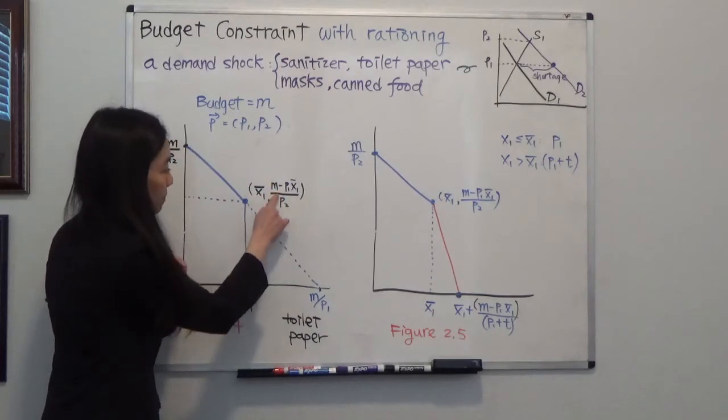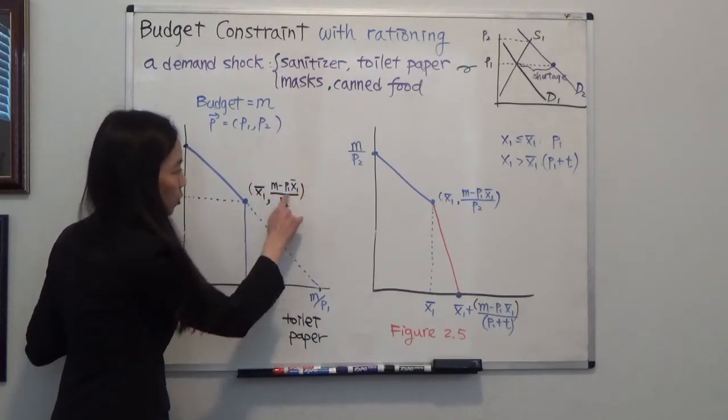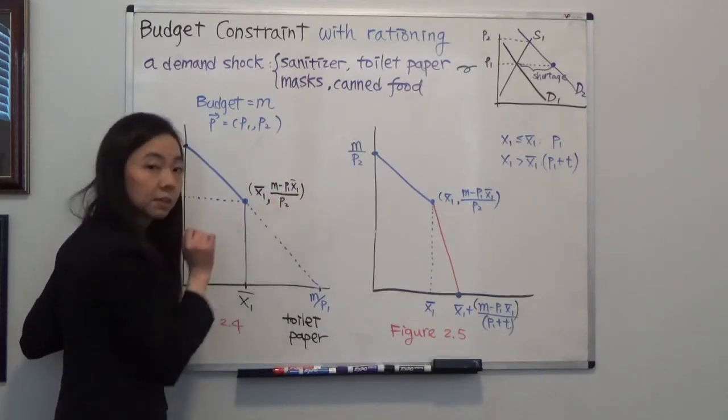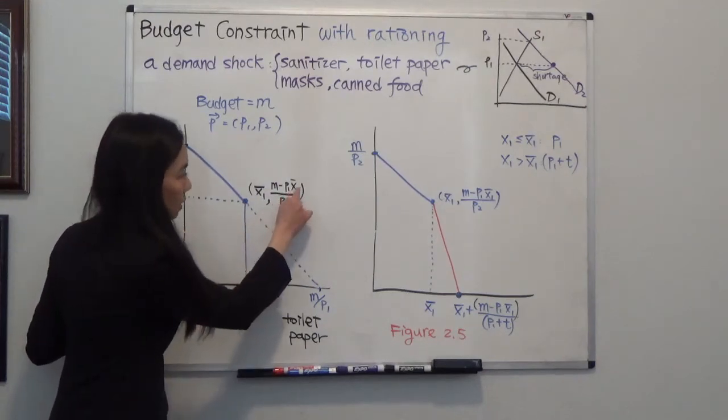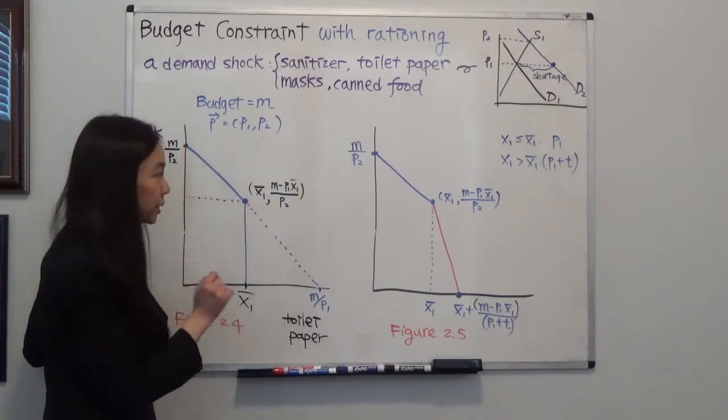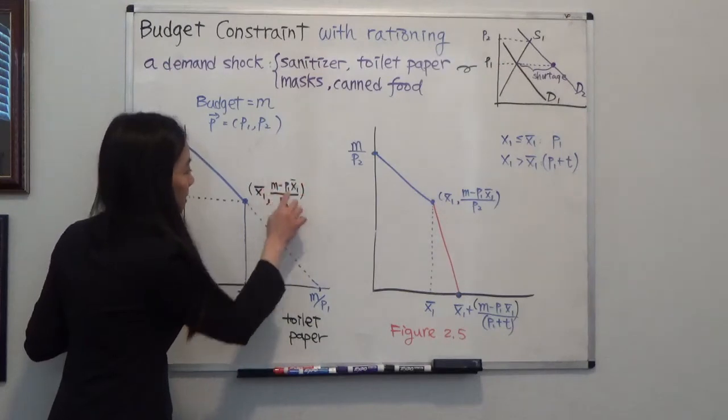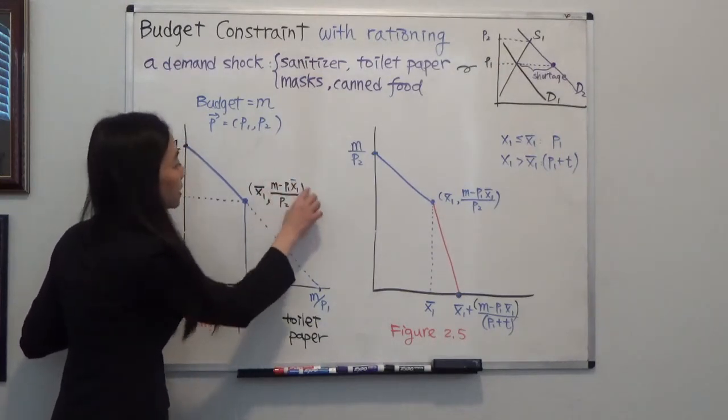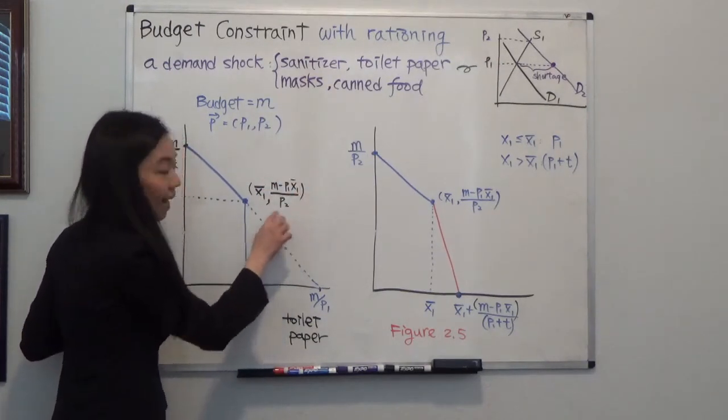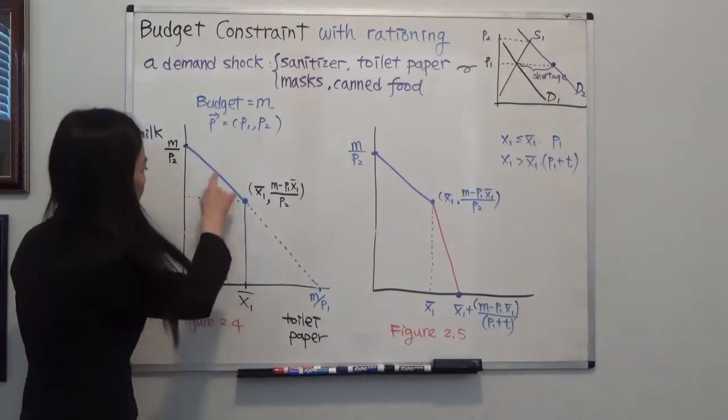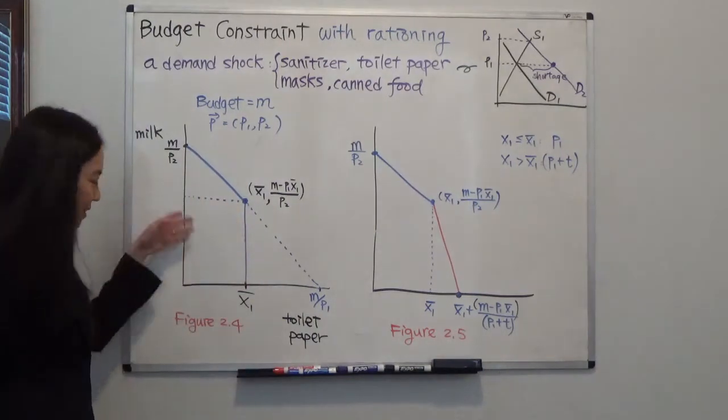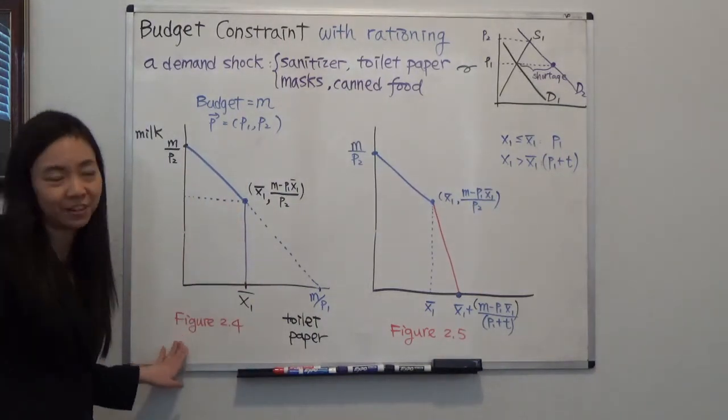So my budget is, after I purchase my toilet paper, P1 is the price of toilet paper times x bar, that's the maximum I can purchase. Now the money left, M minus P1 times x bar, divided by P2, that would be the number of gallons of milk I can consume. So that was the kink point and that's figure 2.4 in Varian.